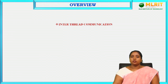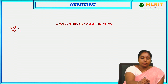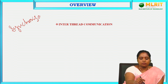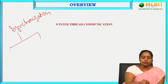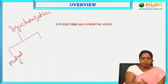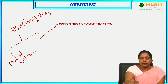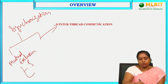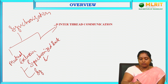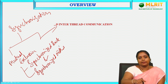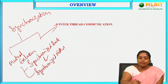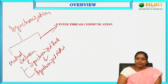In the previous session we saw what the problem of synchronization is and how you can achieve synchronization using two methods: one is mutual exclusion and the second one is inter-process communication. We also saw how you can achieve mutual exclusion using synchronized block and synchronized method with example programs. In this session, you are going to see the second method to achieve synchronization, which is inter-thread communication.